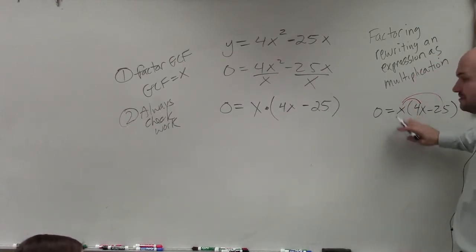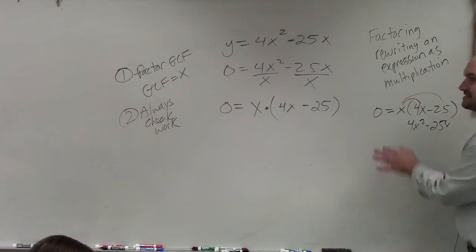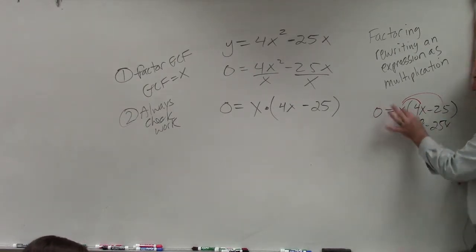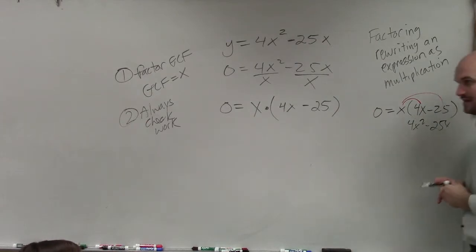x times 4x is 4x squared. x times negative 25 is negative 25x. So do you guys see how this is a multiplied form of our original expression? Yes? OK.